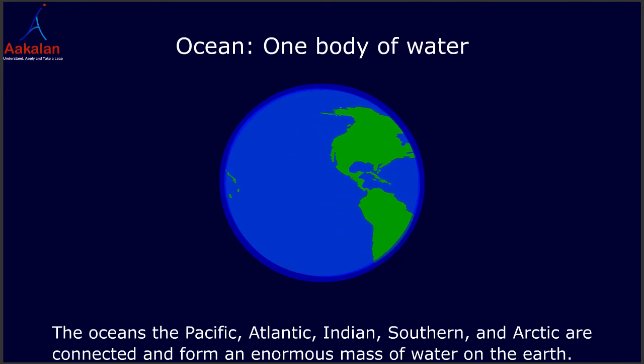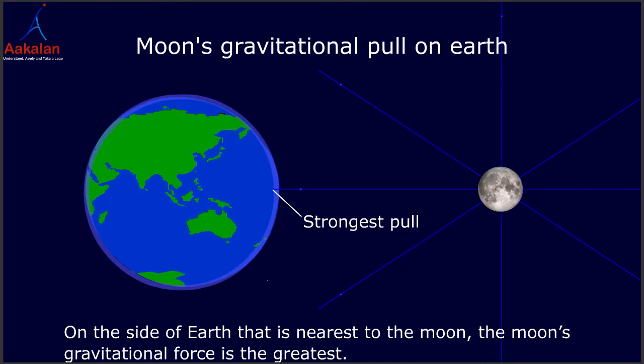Now let us see how tides occur due to the gravitational force of the moon. On the side of the earth which is nearest to the moon, the moon's gravitational force is the greatest.